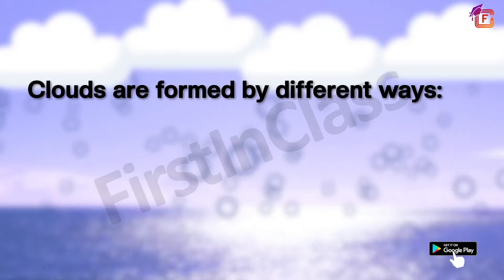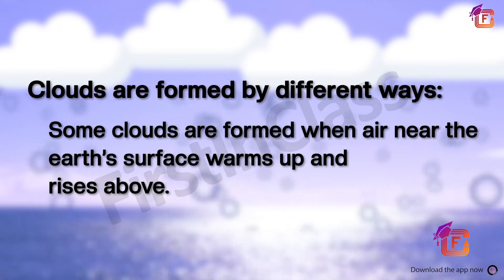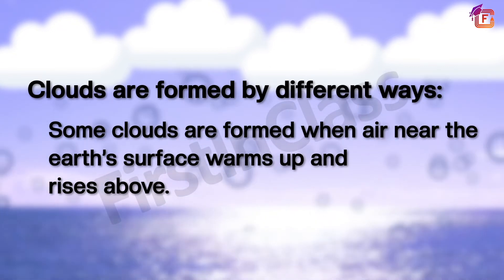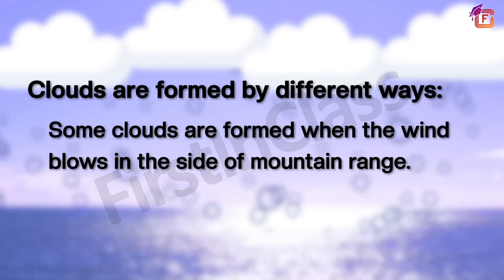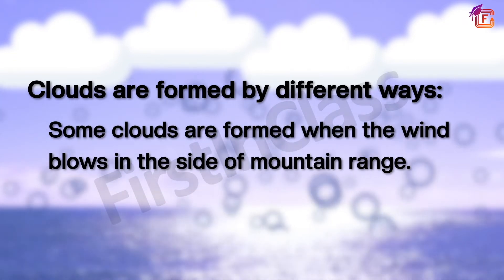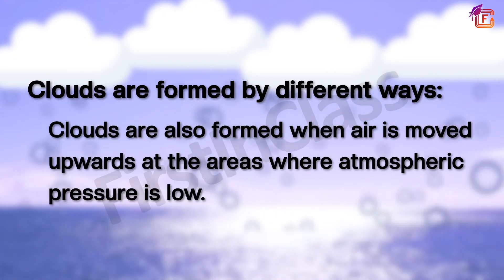The process of condensation plays an important role in bringing water back to the earth's surface. Only a certain amount of water vapor can be held by the air depending on the temperature and moisture present. Clouds are formed by different ways: some clouds are formed when air near the earth's surface warms up and rises, and some clouds are formed when the wind blows against the side of a mountain range.